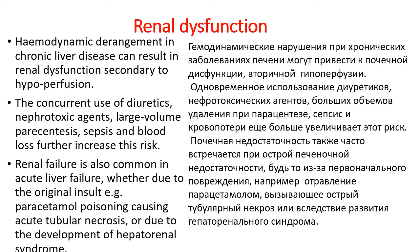Renal dysfunction. Hemodynamic derangement in chronic liver disease can result in renal dysfunction secondary to hypoperfusion. The concurrent use of diuretics, nephrotoxic agents, large-volume paracentesis, sepsis, and blood loss further increases risk. Renal failure is also common in acute liver failure, whether due to the original insult — such as paracetamol poisoning causing acute tubular necrosis — or due to the development of hepatorenal syndrome.